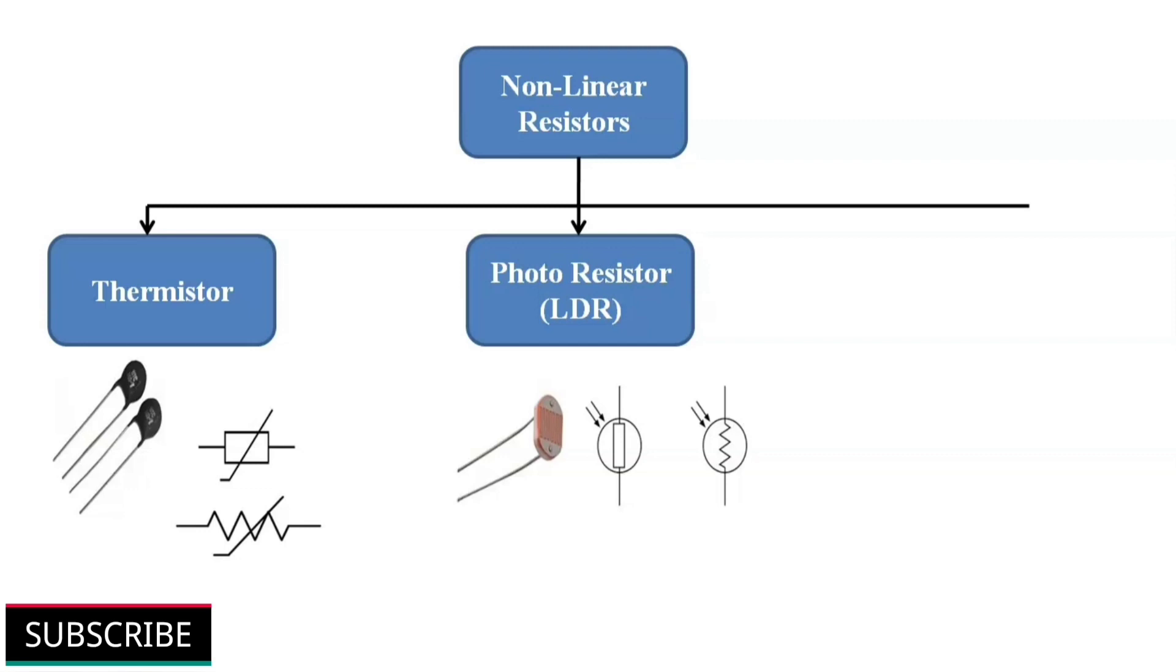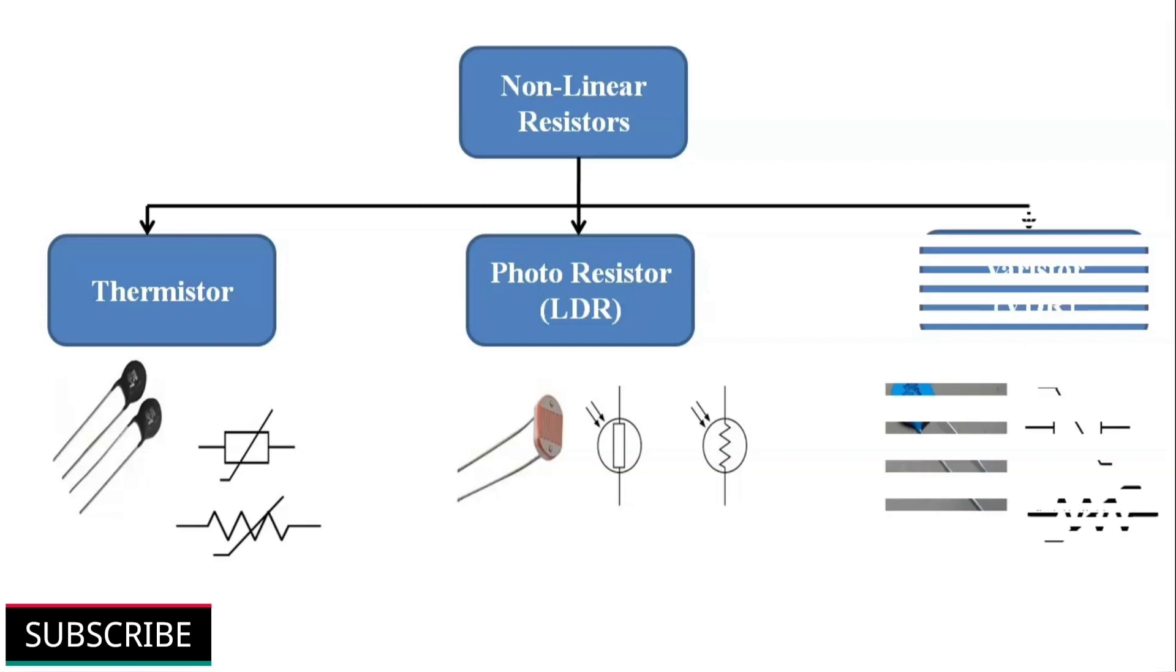Second one photoresistor. Photo means light. In this resistor, the resistance varies with a change in intensity of light. It is also called as LDR, light dependent resistor. The photoresistor's resistance decreases with increase in intensity of light. Photoresistors are used in flame detectors, light meters and photographic devices.